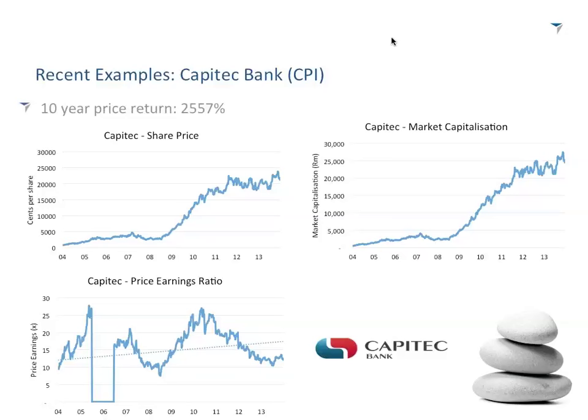Capitec's share price over 10 years started low and goes all the way up. Market capitalization goes all the way up. Capitec started on roughly a 10 times multiple and through various shapes and forms it trades back on a 10 times multiple now, but using a linear regression model you can see the trend actually ticks up. The market is starting to be willing to pay more for Capitec's future earnings than it has before.